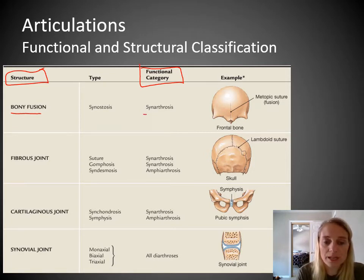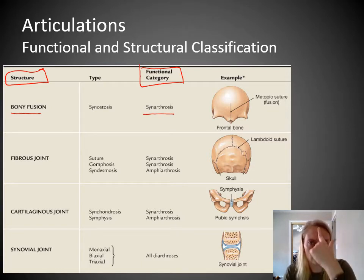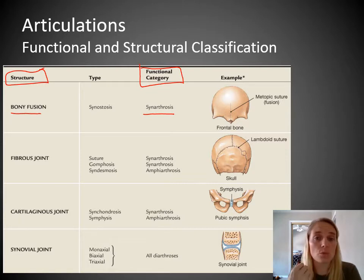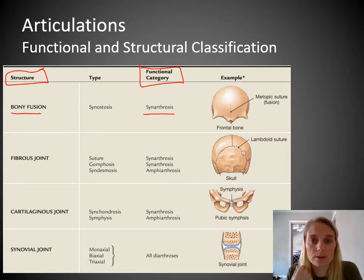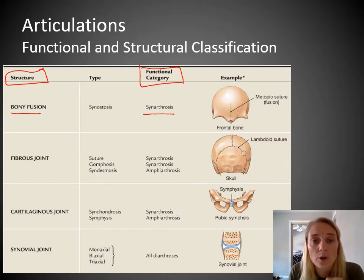If we take a look at the functional classification — do we have any movement that happens along this joint? We don't. So when we have joints where two bones meet but there's no movement, this is called a synarthrosis. SYN means no — synarthrosis. So bony fusions are a synarthrotic, no-movement joint.